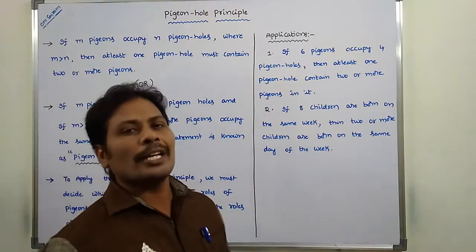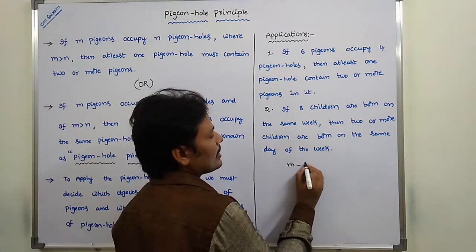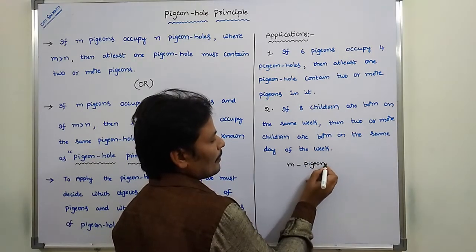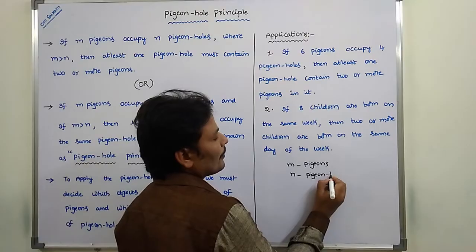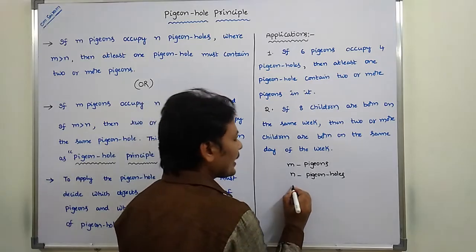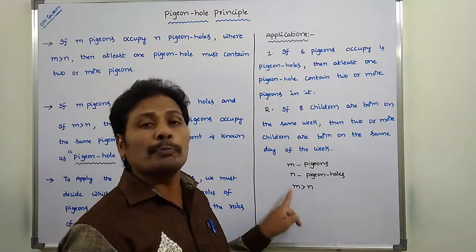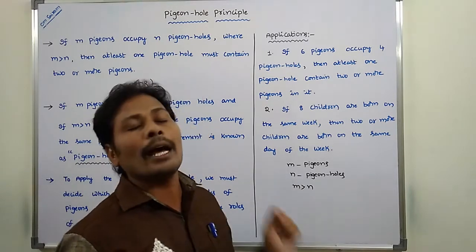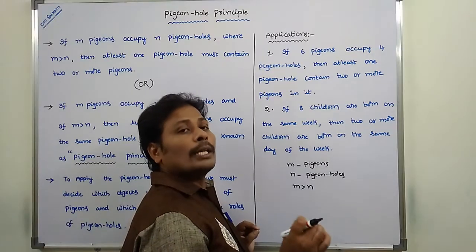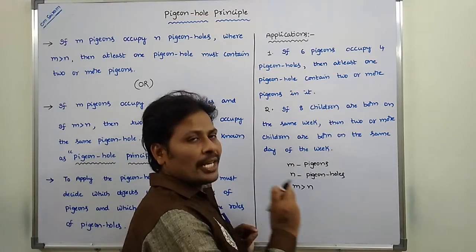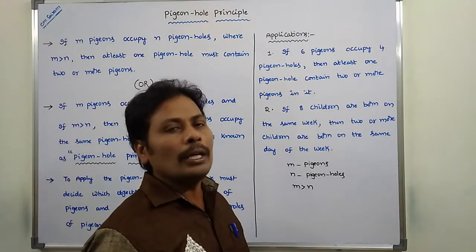So first of all, what is Pigeon Hole principle? Suppose there are m number of pigeons and n number of pigeon holes, where the condition is m greater than n — the number of pigeons is always greater than the number of pigeon holes — such that one pigeon hole contains two or more pigeons in it. This principle is called the Pigeon Hole principle.